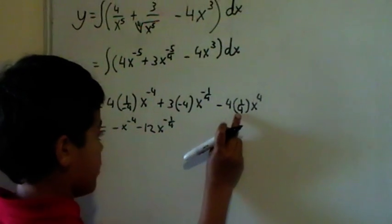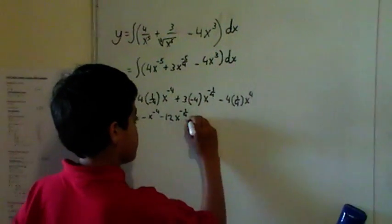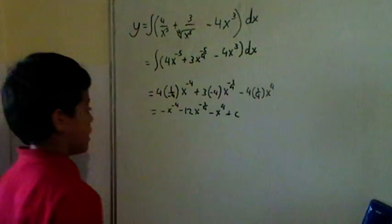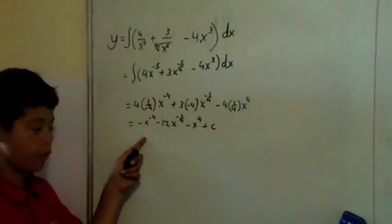And minus 4 times 1 over 4 is minus 1. X power minus 1. And you can express this in fraction or root form.